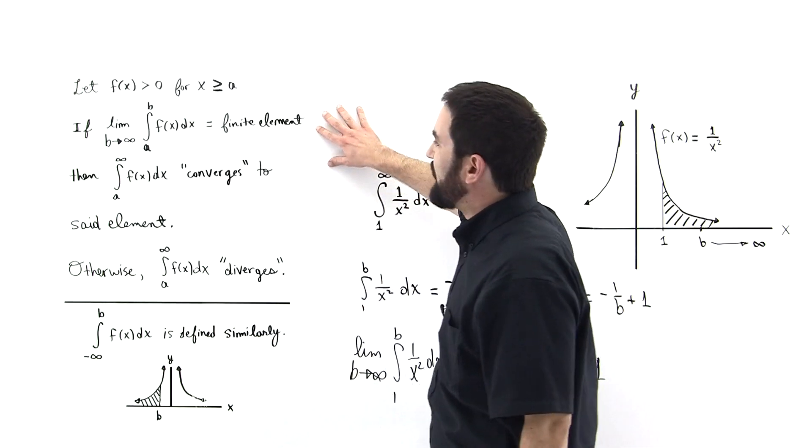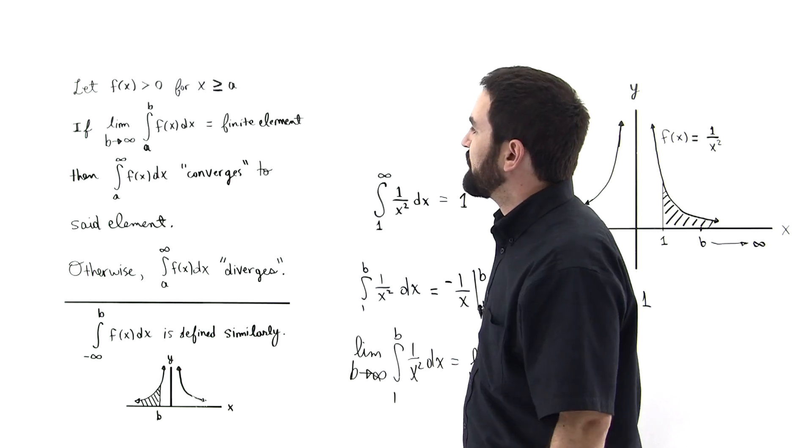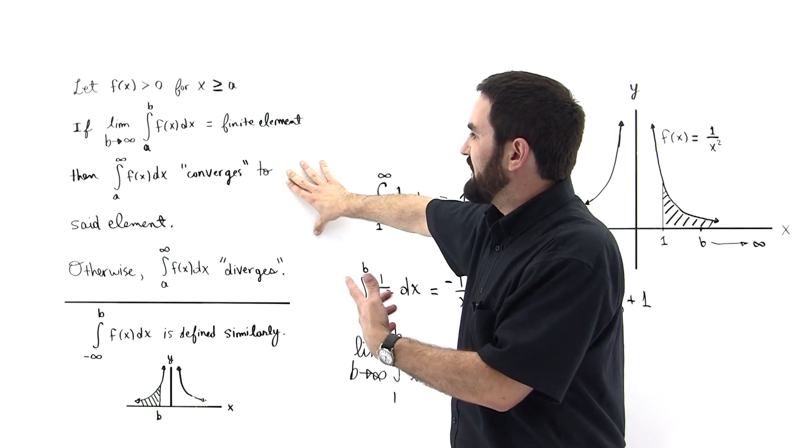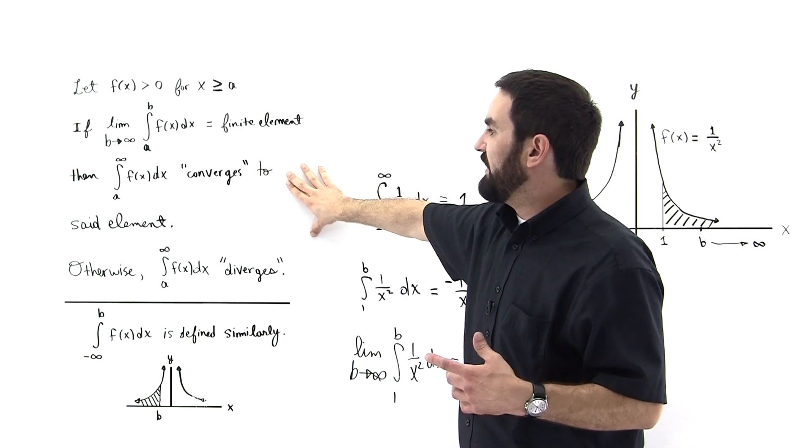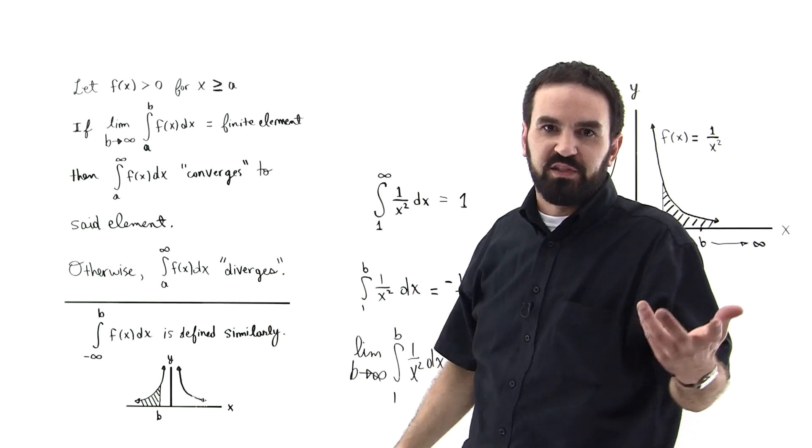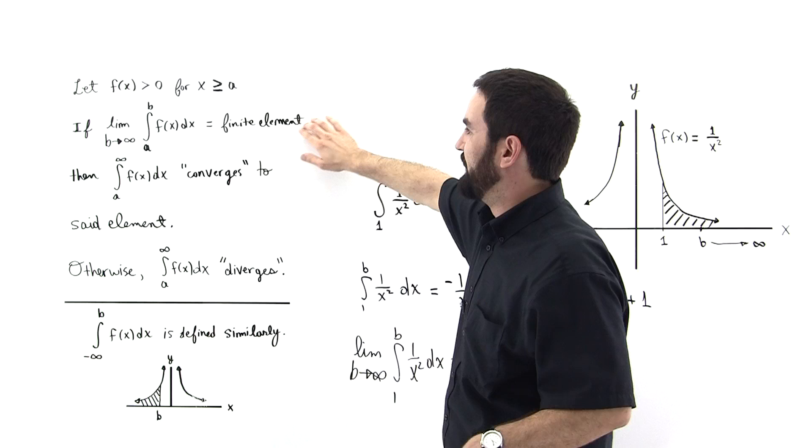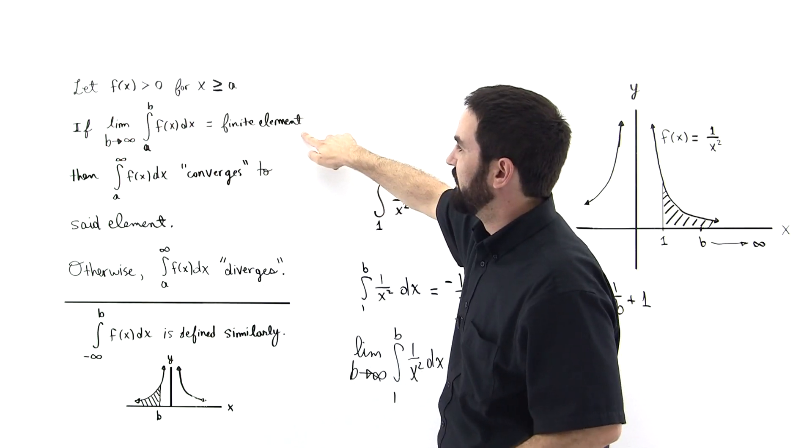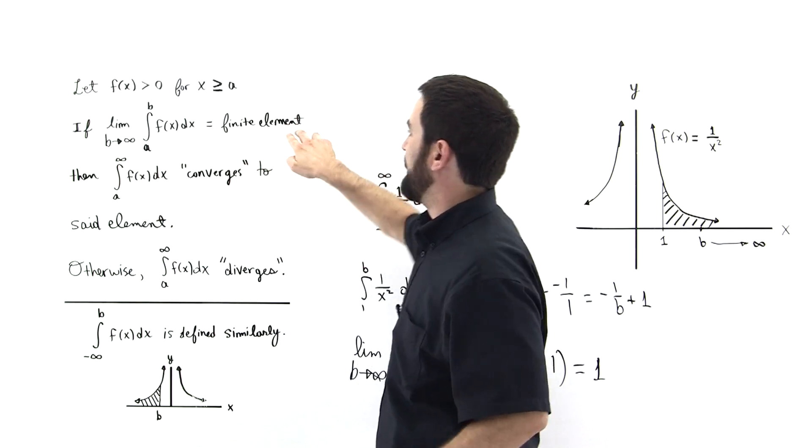...if that is equal to a finite element, that is a finite number, then the integral from a to infinity of f(x) dx is said to converge. And it converges to that element. That is, if this limit is equal to a finite element, then this thing exists and it converges to that finite element.